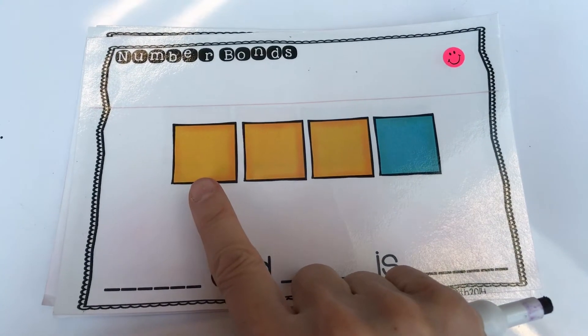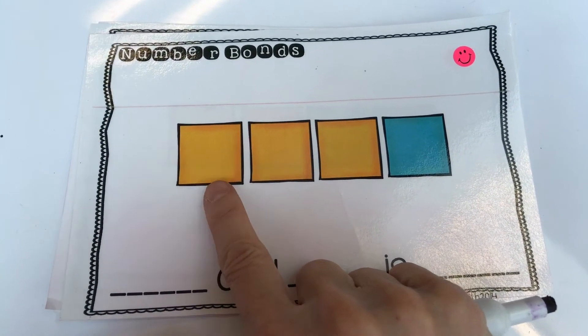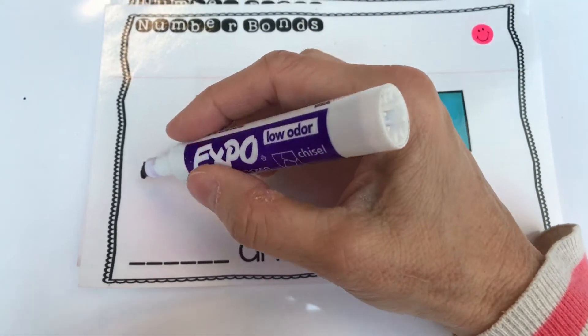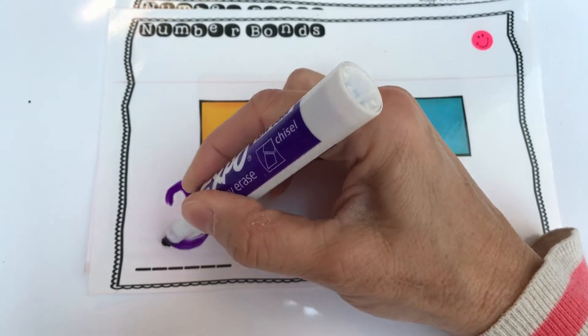So the first thing we're going to do is count the yellow. One, two, three. So now I'm going to write the number three right here. Three.